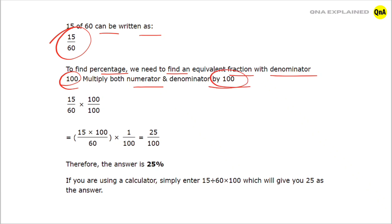15 upon 60 into 100 upon 100 is equal to 15 into 100 upon 60, into 1 upon 100. First we solve it.